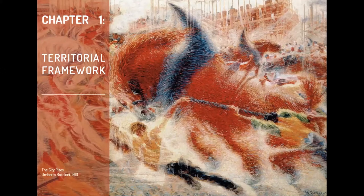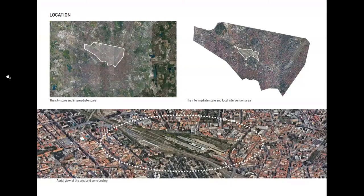Regarding the territorial framework, the case is located in the north of Milan. It's important to underline that I've used a methodology which is multi-scale. I have three main scales: the local scale is the abandoned railways in Farini; the intermediate scale extends this with respect to main roads and local morphology; and the macro scale is the entire city of Milan.